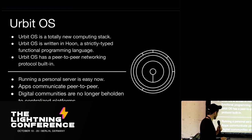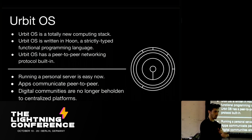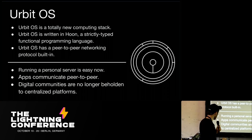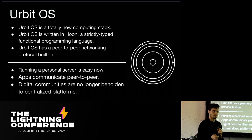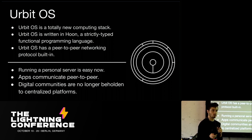Urbit OS has a peer-to-peer networking protocol built in, which makes it actually easier to build apps that communicate peer-to-peer than apps built in a traditional client-server architecture. The goal is to make it easy for people to run a personal server without worrying about security or operations costs, and to make peer-to-peer the default for app development, so that people and communities own their own code and data — not beholden to platforms that can control their speech, monitor them, or serve advertisements.